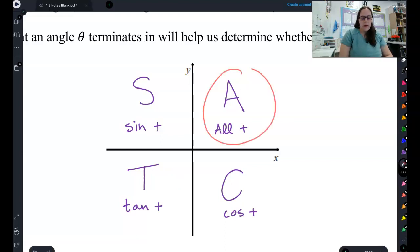That A means that in the first quadrant, all trig functions are positive. That means sine, cosine, and tangent. They're all positive.